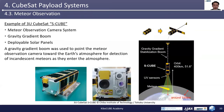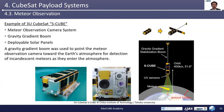The next example is the meteor observation instrument. This is the 3U CubeSat S-cube, implemented with a meteor observation camera system. A gravity gradient boom was used to point the meteor observation camera toward the Earth's atmosphere for detecting incandescent meteors as they entered the atmosphere. It also had deployable solar panels.